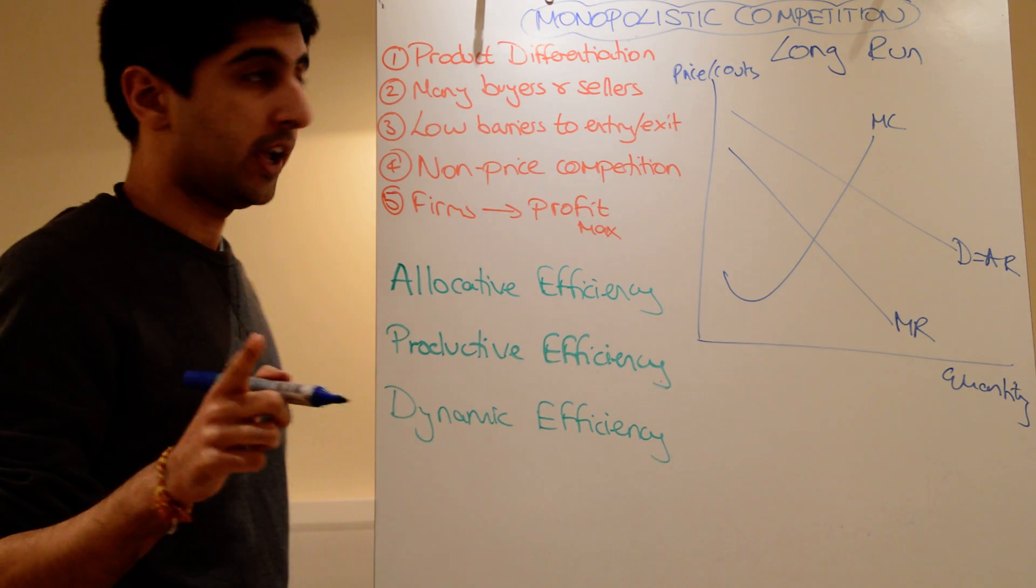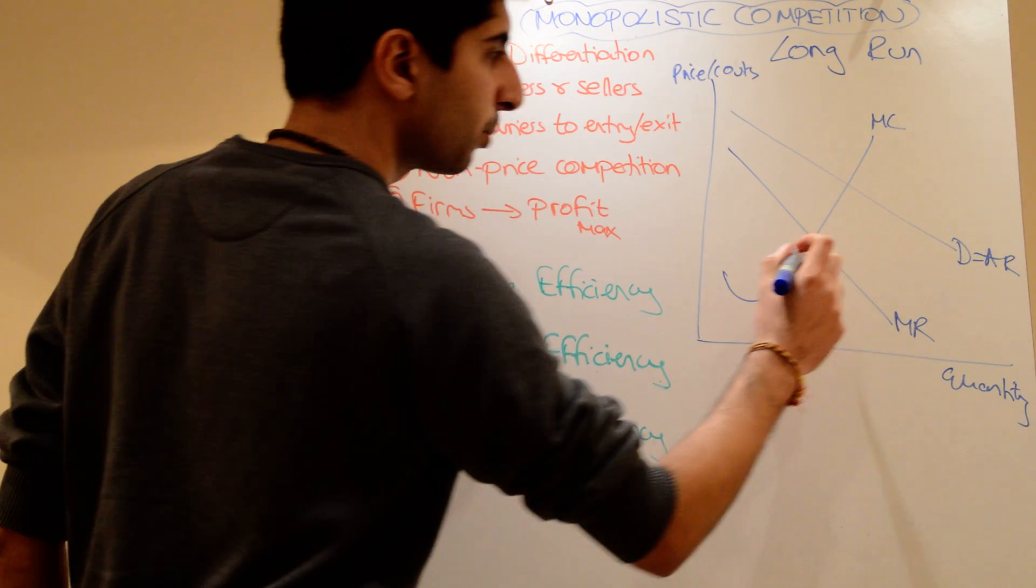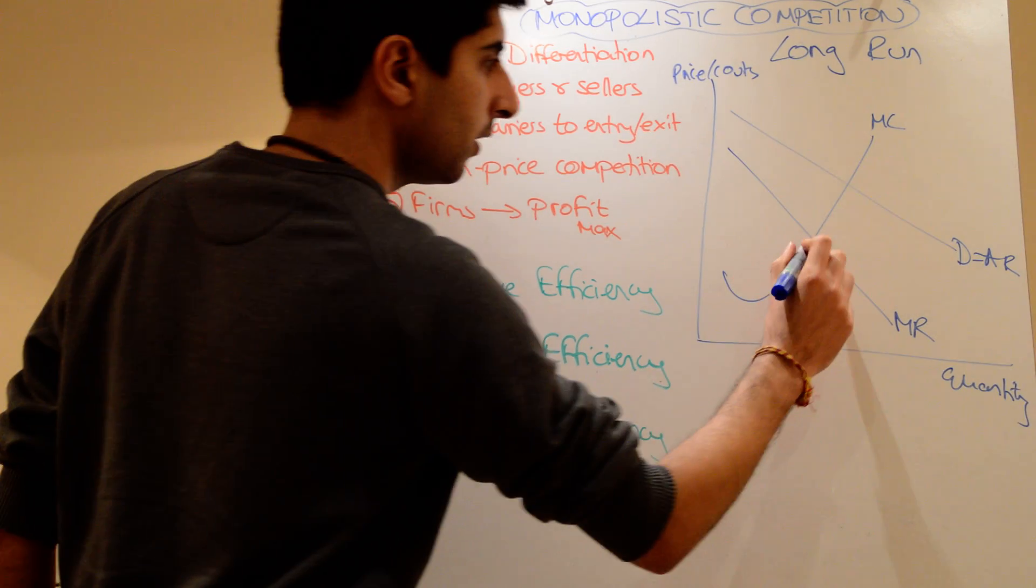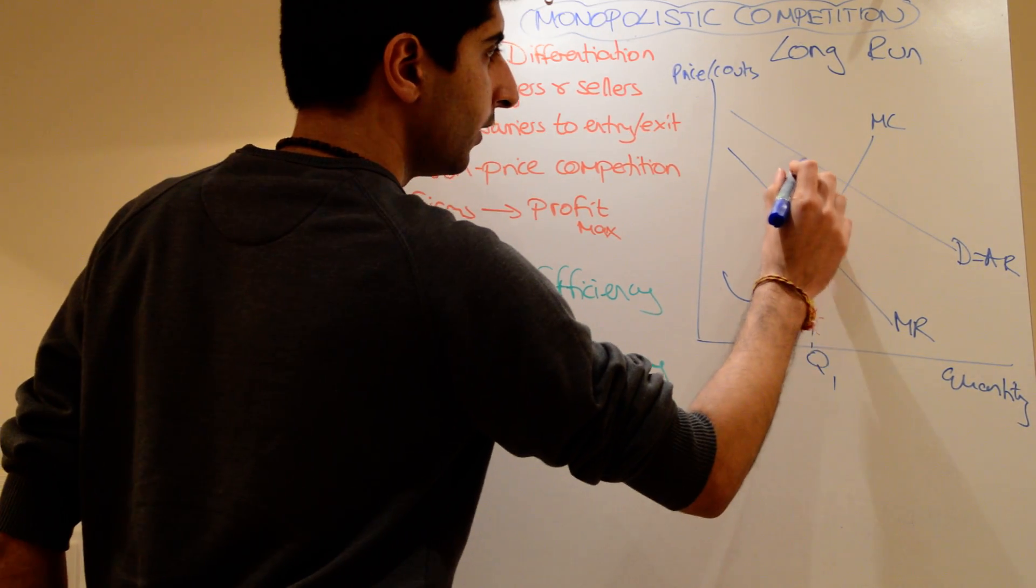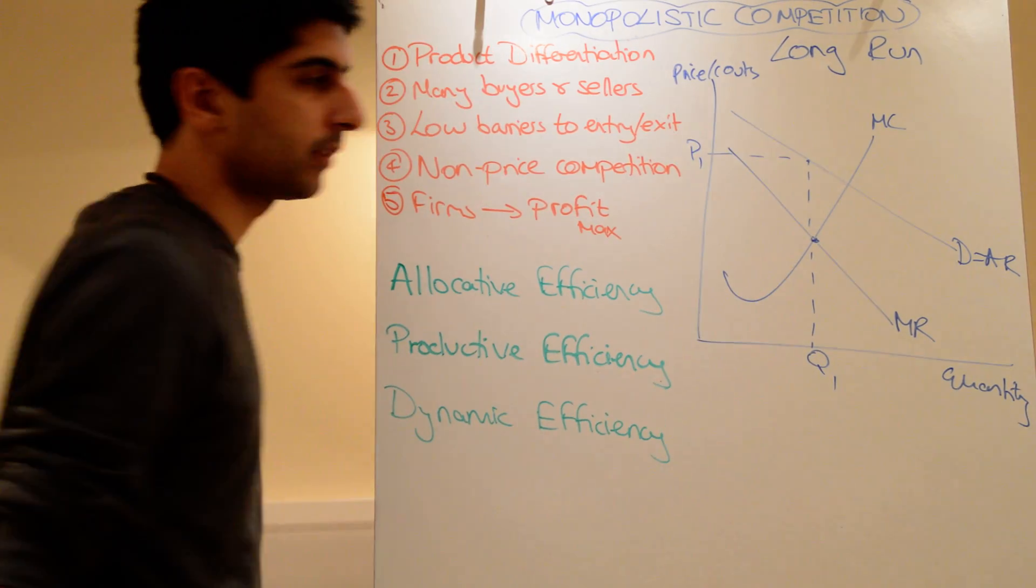Don't draw average cost yet. So once you've done these things, find your profit max point. That occurs where MC equals MR. At that point, quantity is Q1, you read the price off the demand curve, P1.